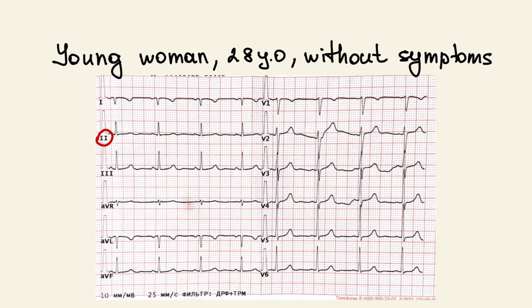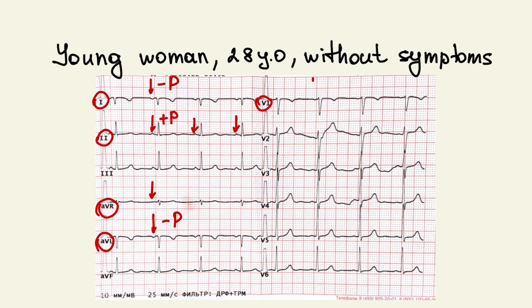Look at lead 2. The P wave is positive before every QRS complex, but we don't see a negative P wave at lead AVR. This is unusual and not typical for sinus rhythm. We can see a negative P wave at lead 1, AVL, and at lead V1. At lead 1, the P wave should always be positive in sinus rhythm, but here we see a negative P wave.